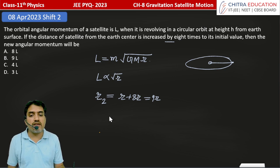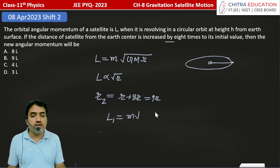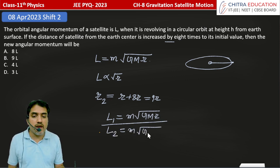If we put this value, L equal to M. First let's see the value of L1 - L1 is equal to M root G capital M R, and if we find the value of L2, it will be M root G capital M 9R.